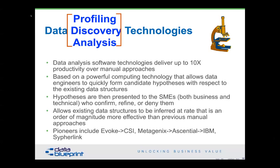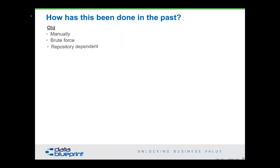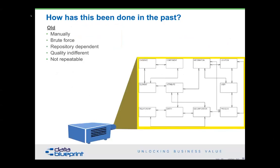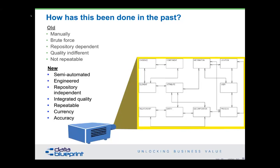The key for these tools is that they can deliver up to 10 times productivity over manual approaches. People's time is much more expensive than the standard machine time we can put on these things. We've changed the model of how we used to construct and answer questions about data. The old model was manual in nature, brute force, independent, and it would not really address quality aspects — it would only be done once. The new way with profiling tools is semi-automated, engineered, repository-independent — we can integrate quality, they are repeatable, and give you currency and accuracy.